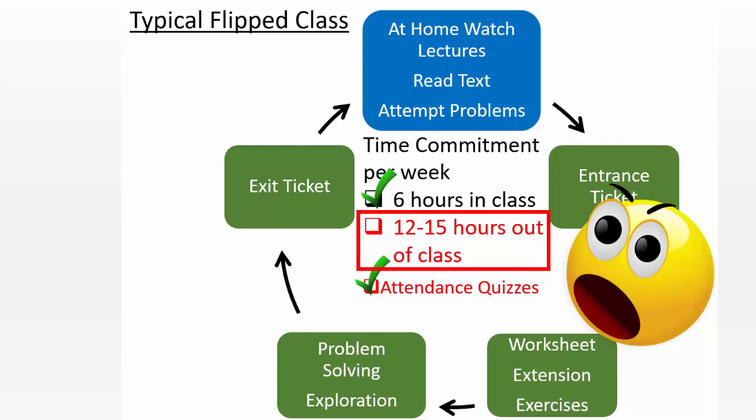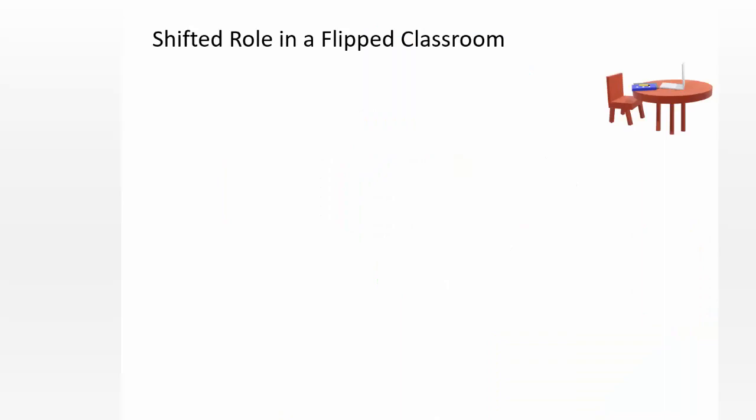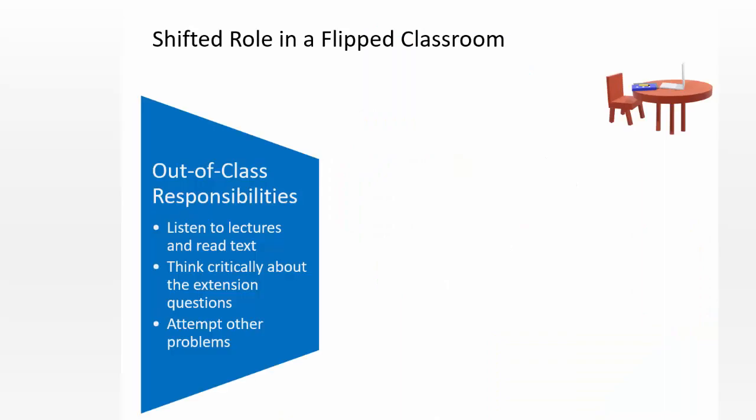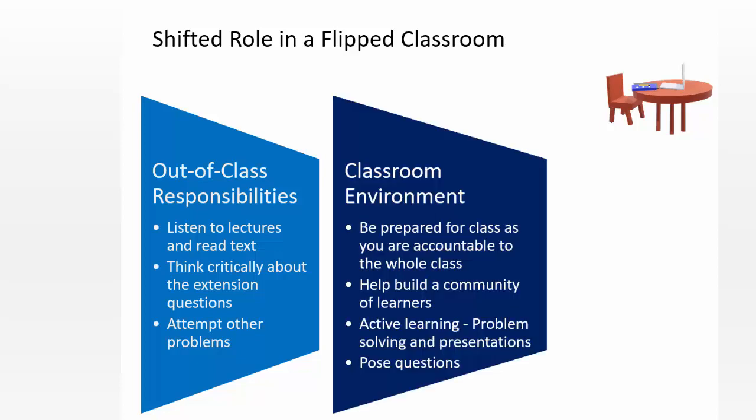So it's extremely important to recognize what commitment you are making. So your role in a flipped class is shifted. Out of class, you're listening to lectures, you're thinking critically about extension questions and attempting other problems that were assigned. Inside the classroom, you're not just passively sitting, you are actively engaged. You have to be prepared, be accountable to the whole class. You have to help build a community of learners. So it's not enough you do it. You also help your neighbors. You motivate your neighbors. You are actively learning.